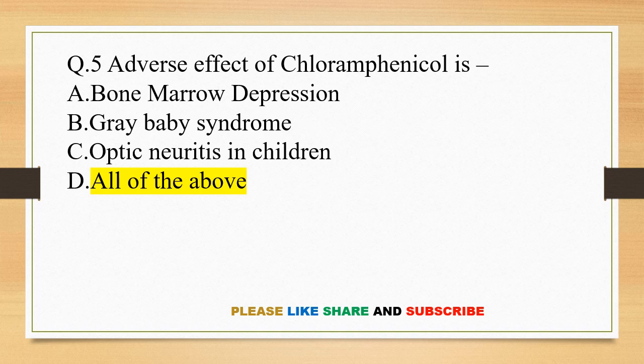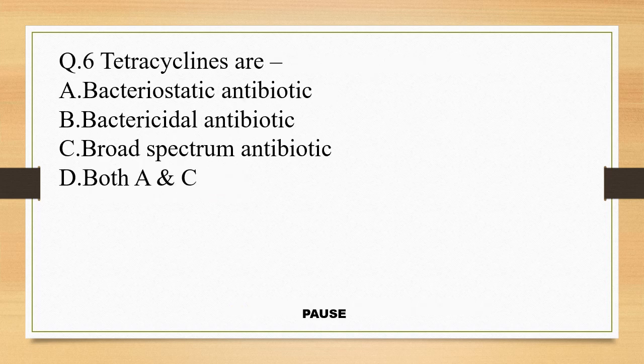Question 6. Tetracyclines are: option A, bacteriostatic antibiotic; option B, bactericidal antibiotic; option C, broad spectrum antibiotic; and option D, both A and C. And the right answer is option D, both A and C. That means tetracyclines are bacteriostatic as well as broad spectrum antibiotic.